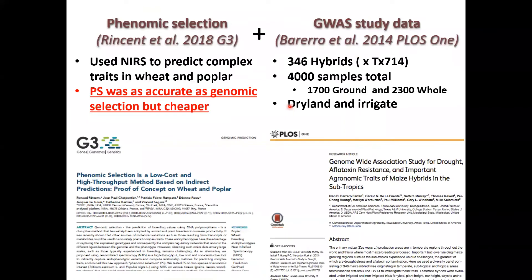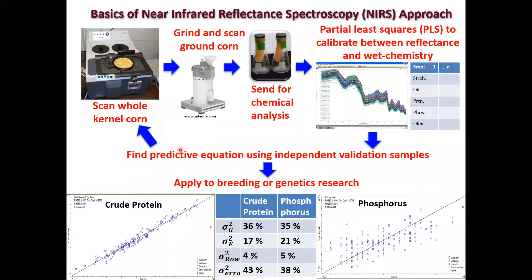This leads me to phenomic selection, which is really where I want to take everybody today. There was an amazing paper by Rincón et al. in 2018 — I encourage everybody to read it. They used both wheat and poplar near-infrared spectroscopy to predict complex traits, and found that phenomic selection was as accurate as genomic selection but cheaper. Some of my colleagues and I wanted to follow this up, and we happened to have a genome-wide association study published a while ago. I'll give a brief background on near-infrared spectroscopy for those who might not be familiar.